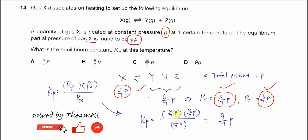Therefore, we will get this answer. Just substitute all the partial pressures in there, you should get 9 over 7 P, which is B. That's all, thank you.